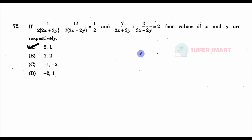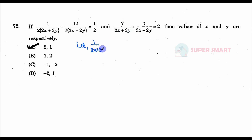It will use a little easy method to solve it, because it looks a little complicated and there is also a longer simplification. So first, what do we do here? Let: if you take 1 by (2x + 3y), let that equal a, and 1 by (3x − 2y) equal b.